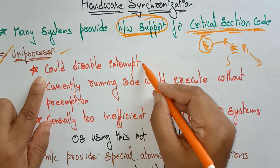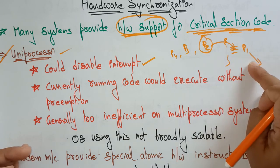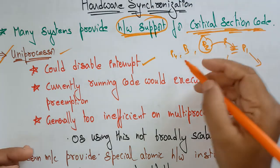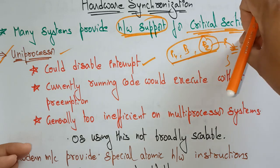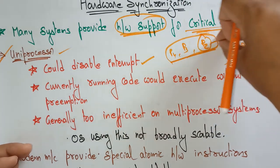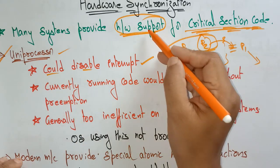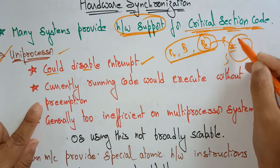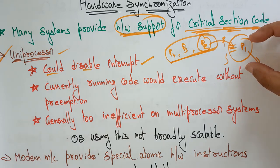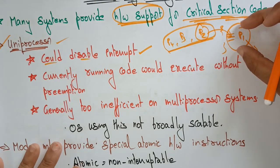First, the hardware could disable the interrupts. P2, P3, P4 are all on the queue, and P1 is executing in the critical section code. The hardware completely disables all these interrupts, because P2, P3, P4 are disturbing the processor to stop its instruction and execute their instructions. To avoid that, it simply disables the interrupts, so the currently running code would execute without preemption. Without any interrupts, P1 will complete its work and exit the critical section.